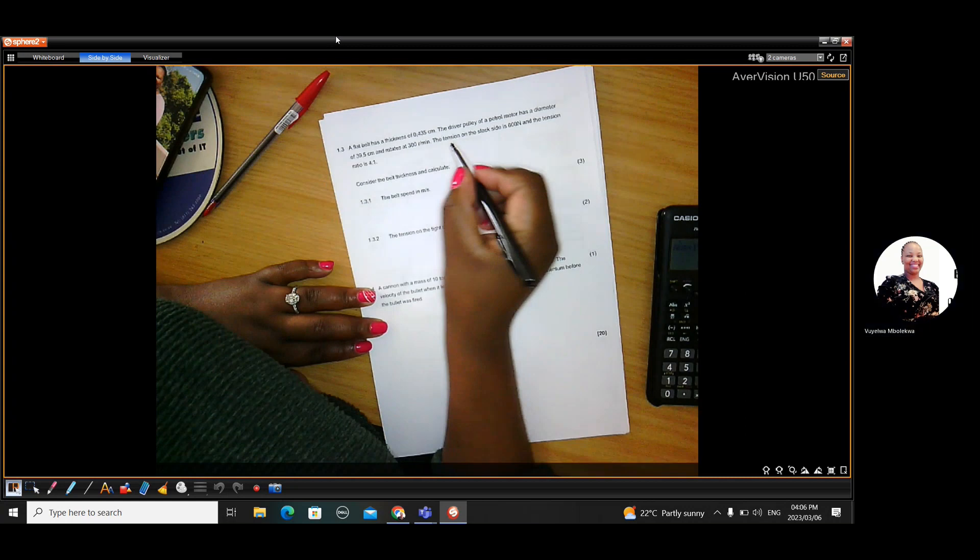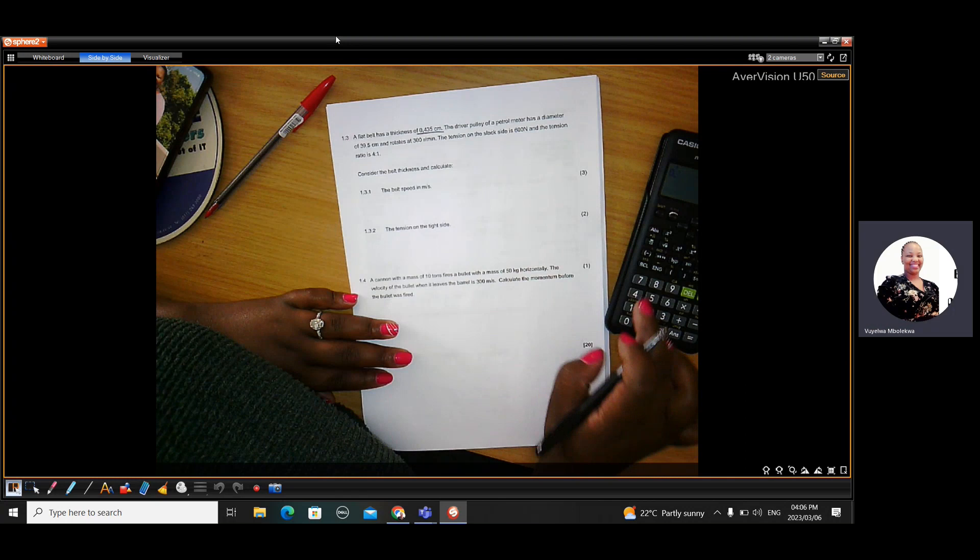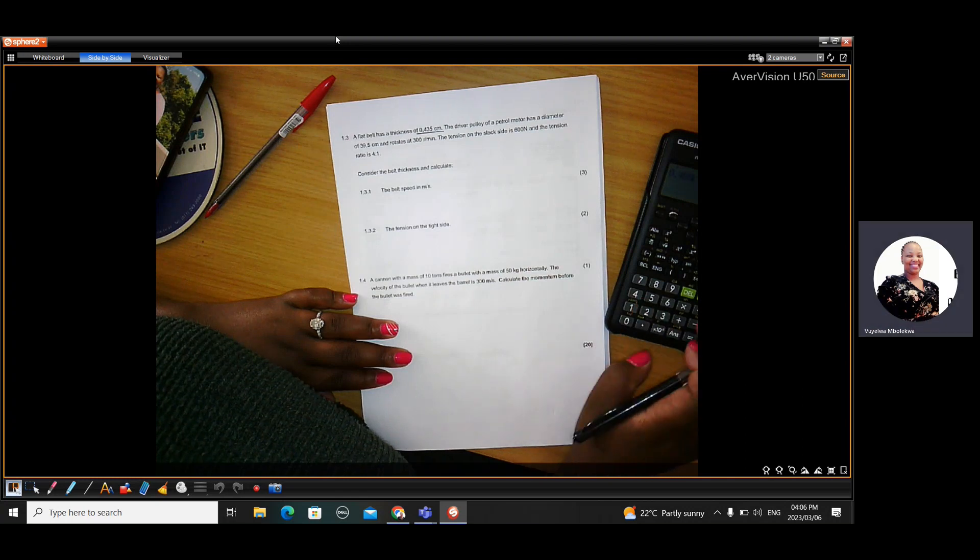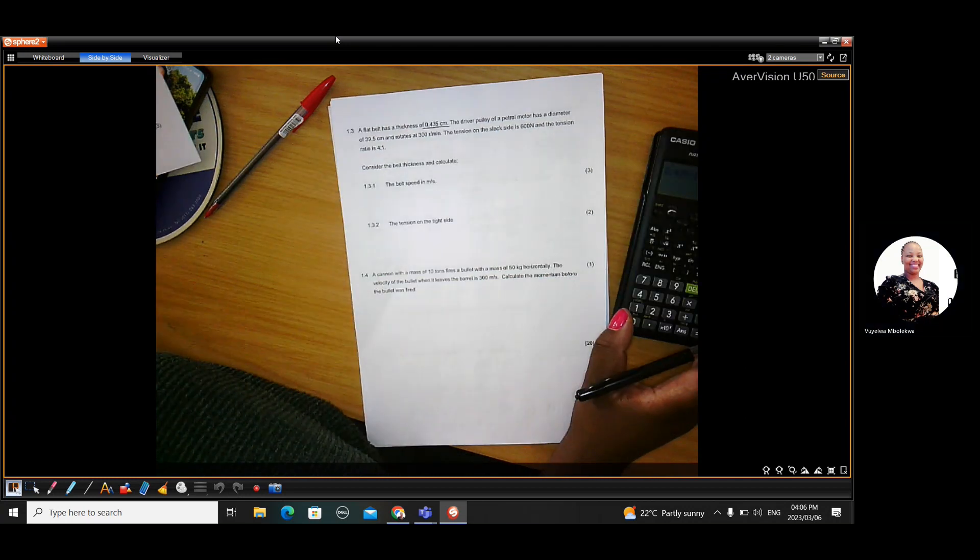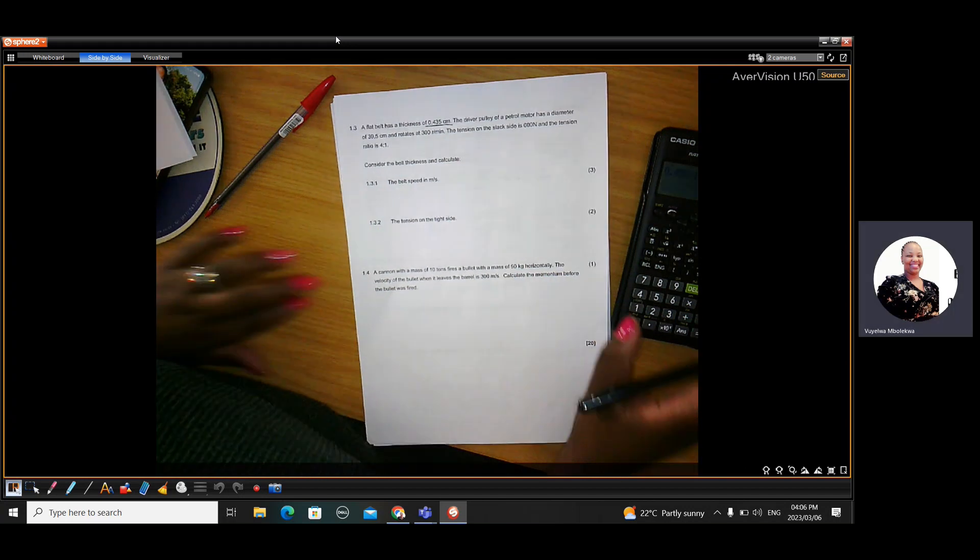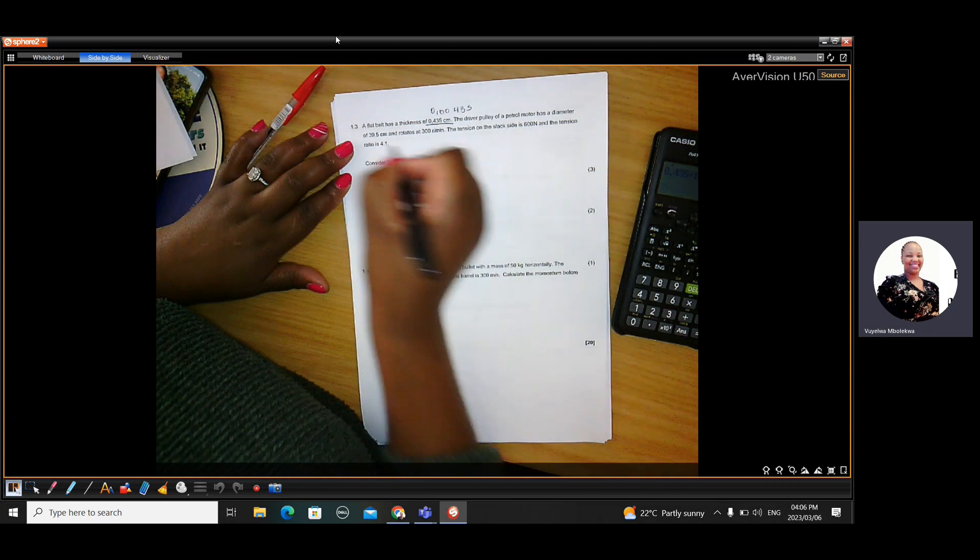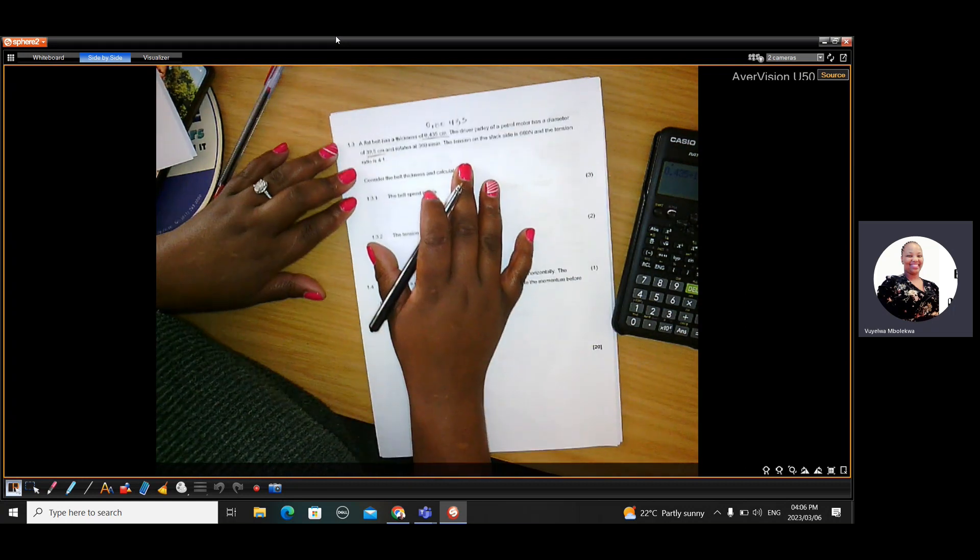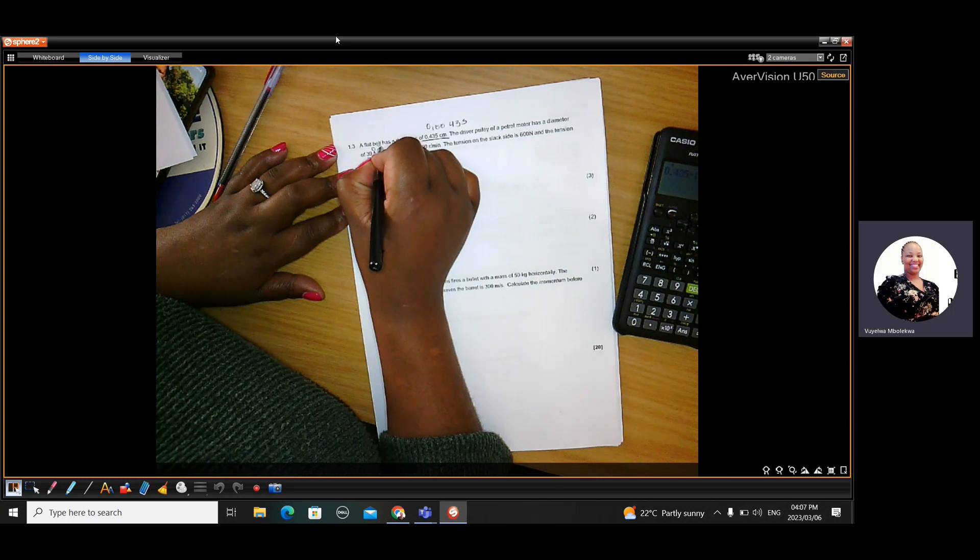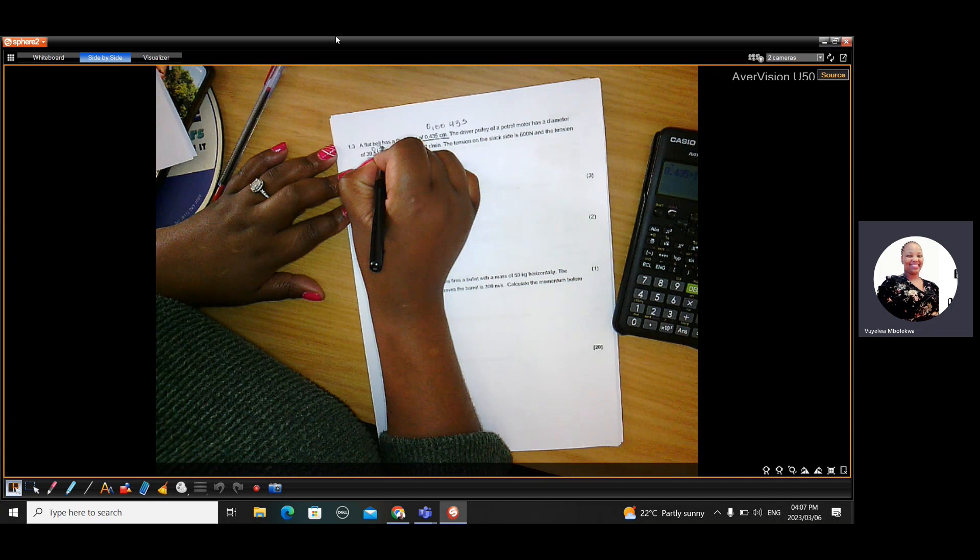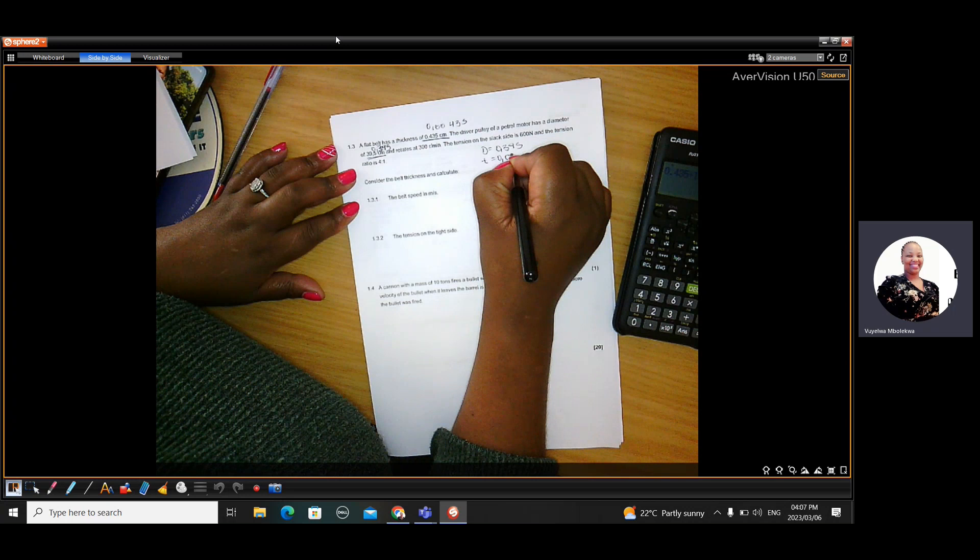Here they give us the thickness. The thickness. So you see this thickness is in centimeters. We need to bring it to meters. 0.435 divide by 100. It gives us 0.00435. And then this is the diameter, also in centimeters. So the diameter is going to be 0.395. So the diameter is 0.395. The thickness is equal to 0.00435. This is now in meters.